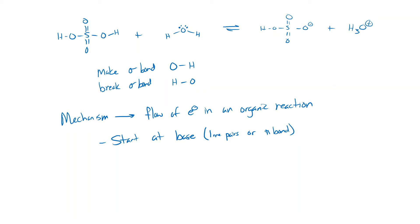In this case our base is H2O, as we established in the previous video. H2SO4 is our acid and H2O is our base. That means the oxygen has lone pairs. We don't have any pi bonds, so we're going to use those lone pairs to make a bond to this hydrogen. The oxygen is sharing its lone pair with that hydrogen.